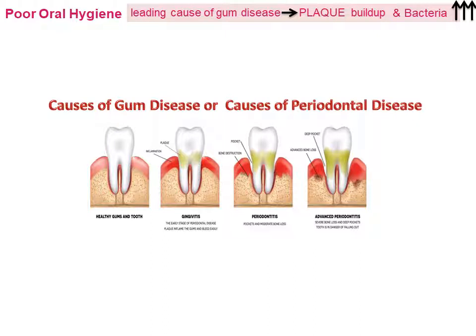Other factors that contribute to periodontal disease are family history of dental diseases and diabetes. Because of increased blood sugar, diabetics are at a higher risk of developing infections including gum disease, periodontal disease, and tooth cavities. Smoking makes it harder for gum tissue to repair itself and is one of the biggest risk factors for gingivitis, since it weakens the body's ability to fight infection.